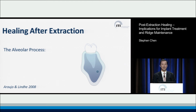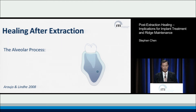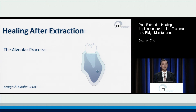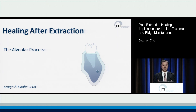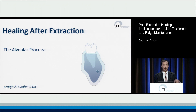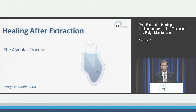So let's look at healing after extraction. Here you see a diagram of the alveolar process in cross-section. You see a tooth that sits in a posterior mandibular site, and you can identify the structures — the cortical bone.